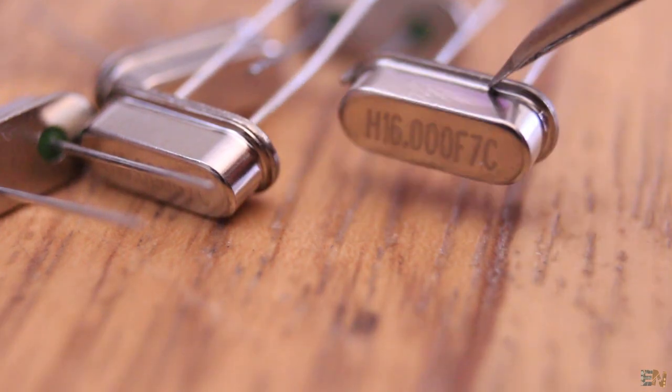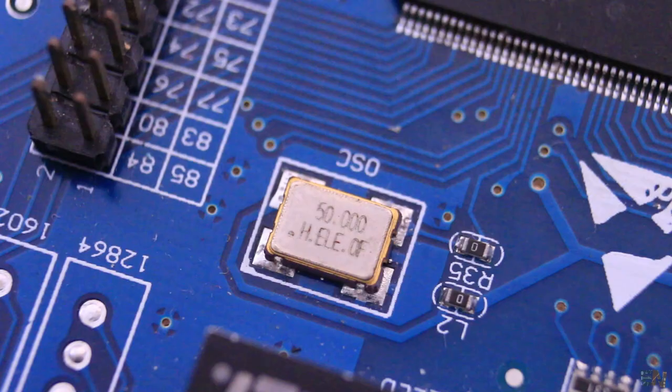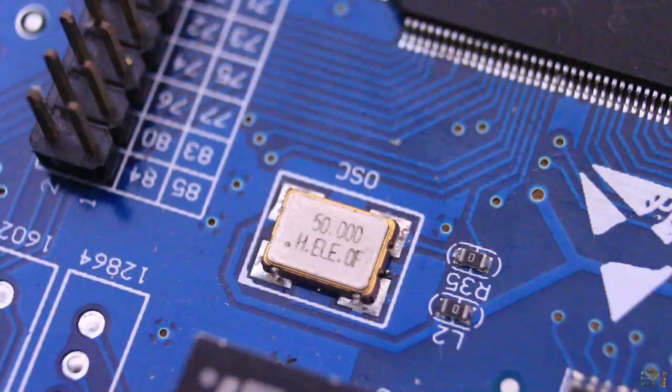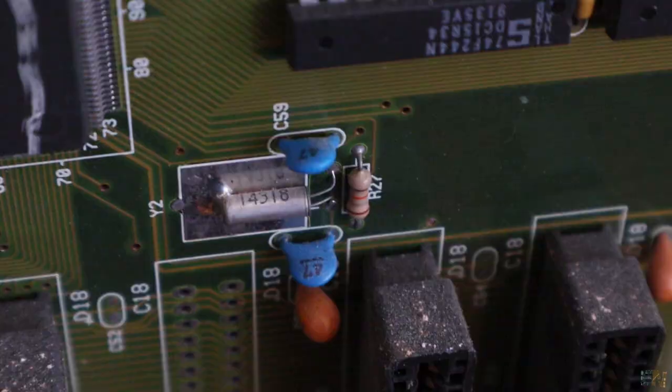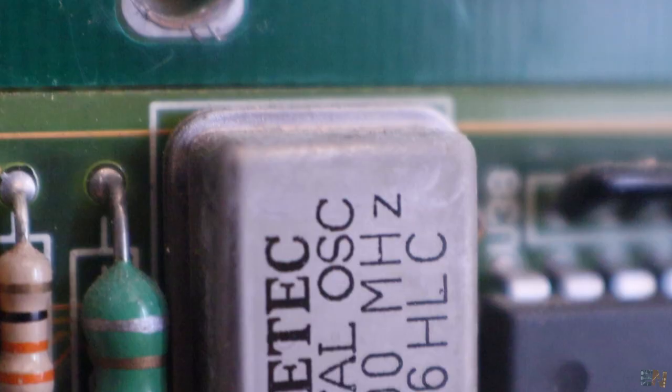Crystal or ceramic resonator, and then we have the oscillator. What is the difference between these three elements? Why we need them in our circuits, how each of these work, and what configurations do we have? In this video we will see all that.